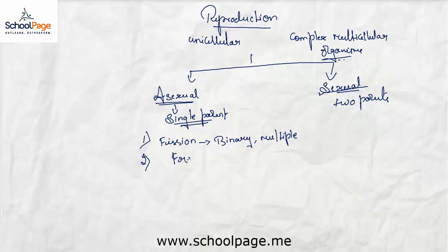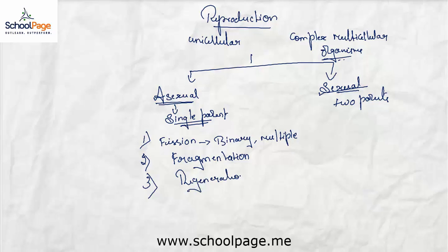The second method of asexual reproduction is fragmentation. As the name indicates, the organism splits into smaller pieces; upon maturation, each piece grows into a new individual. This mode of reproduction is seen in multicellular organisms with simple body organization. Another method is regeneration, and also budding, where a bud is formed and grows into a new individual.